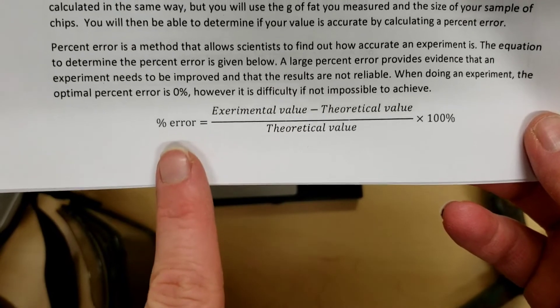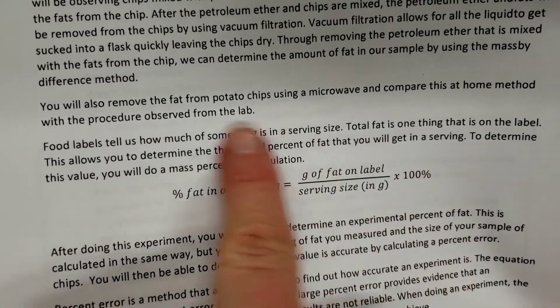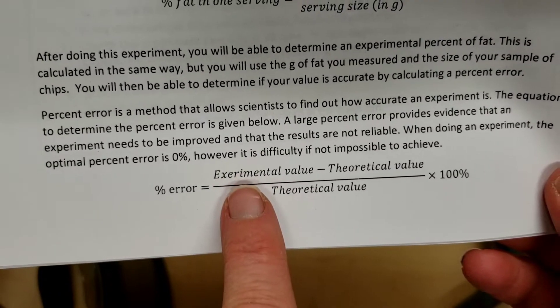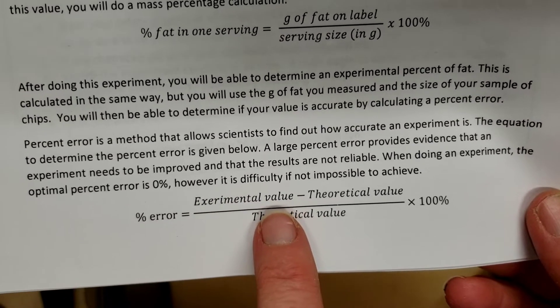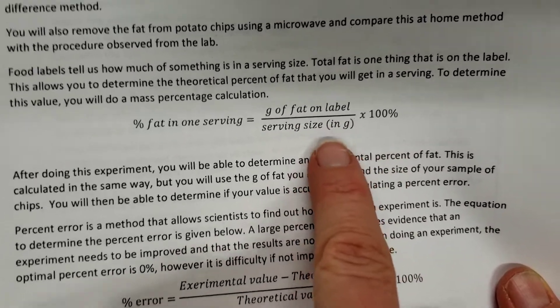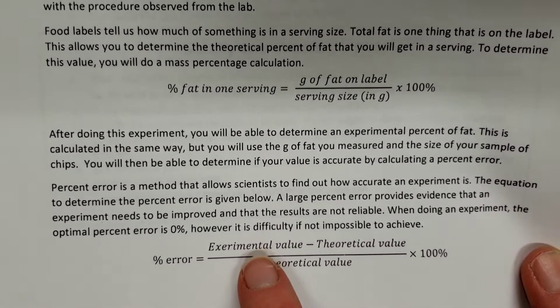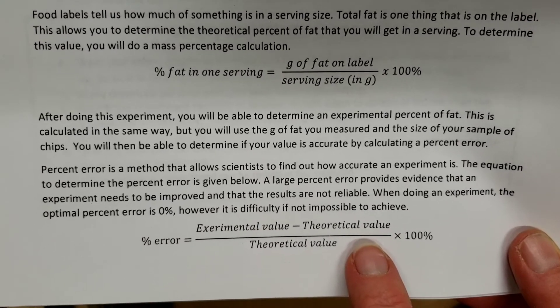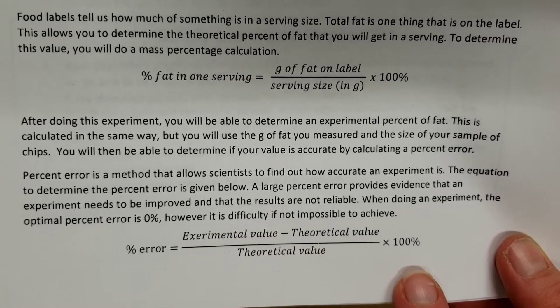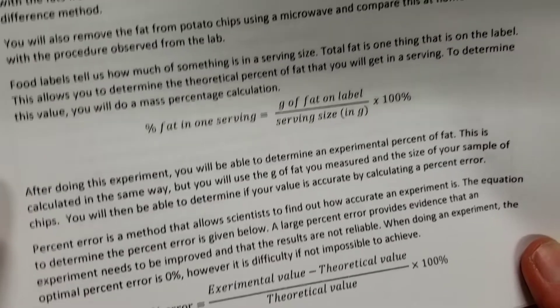We're also going to be looking at percent error. So we're going to be taking some measurements through calculating the percent fat. That's going to be our theoretical value, and we're going to compare the two. Experimental is through the course of our experimentation - how much fat did we find? The theoretical value is from the package, what the percent fat should be. So in order to calculate our percent error, we're comparing that experimental value, subtracting the theoretical value from the package, dividing by that theoretical value times 100%. This can give us lots of information about how accurate our experimental results are.